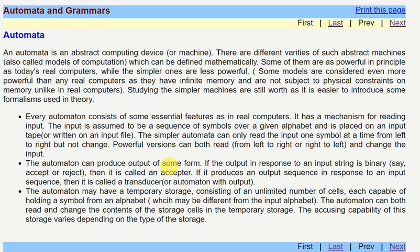There are some features of automation. There is an input tape which contains a sequence of symbols. What does this simpler automata do? It reads input symbols one by one from left to right.